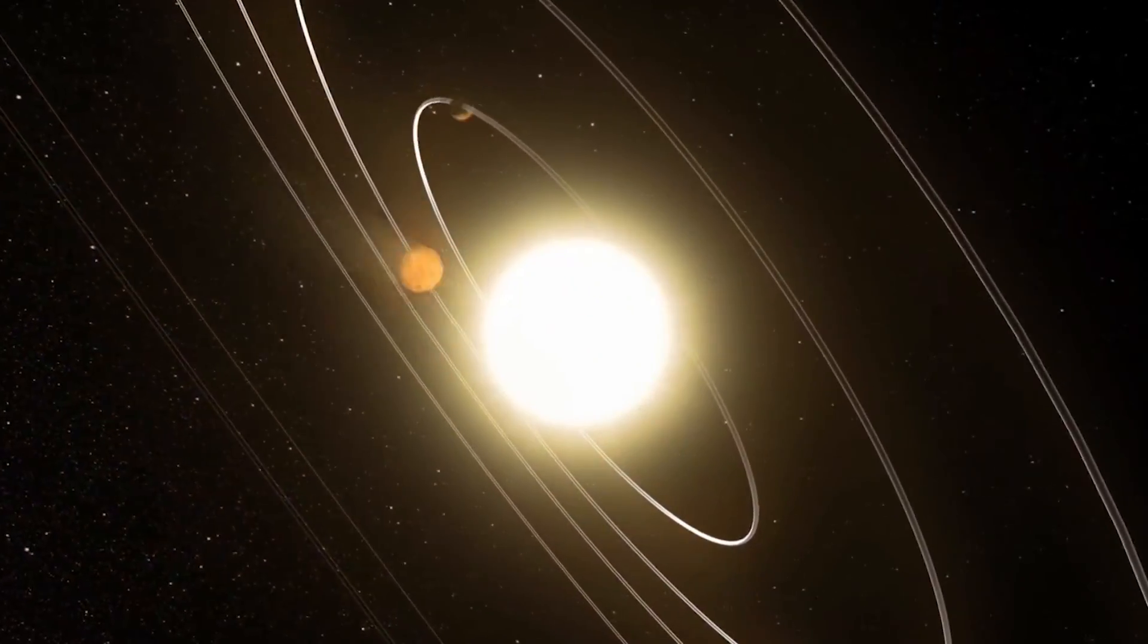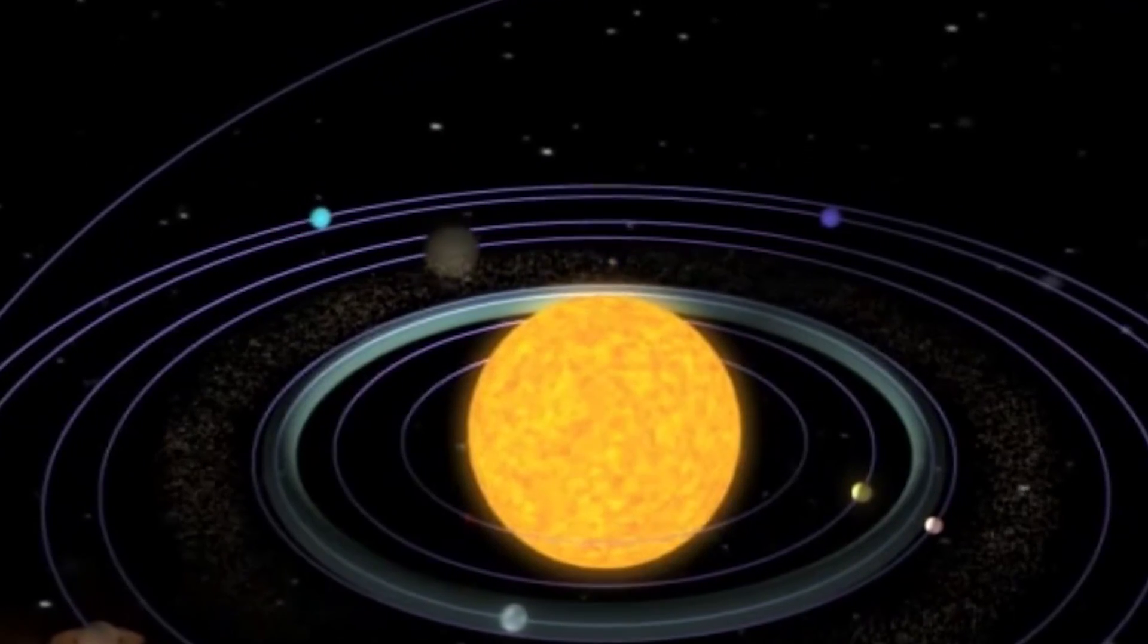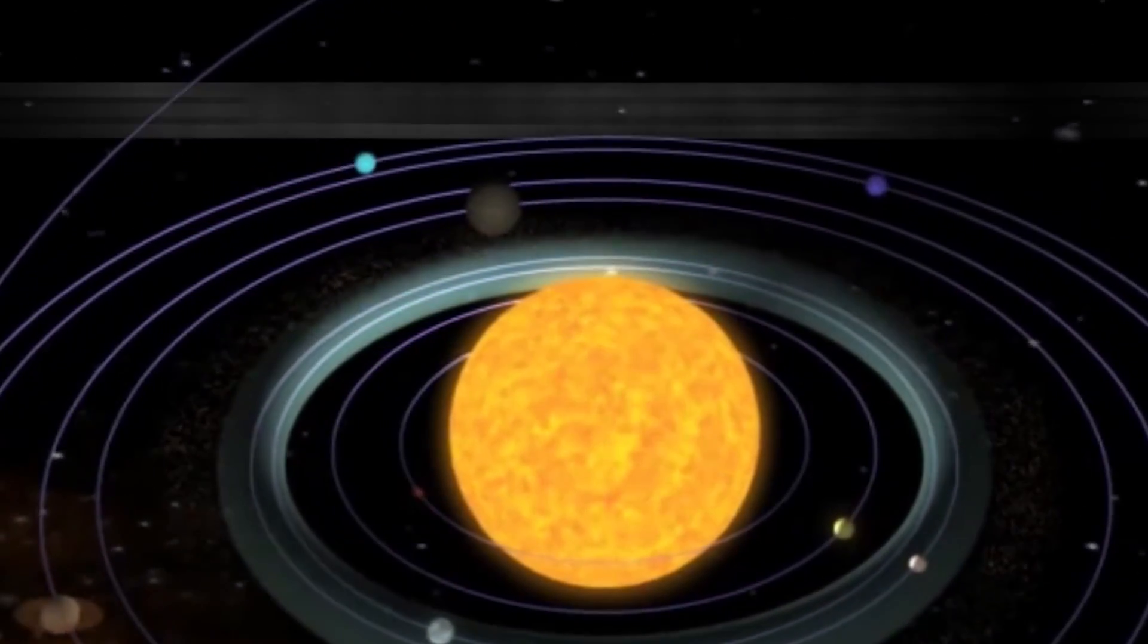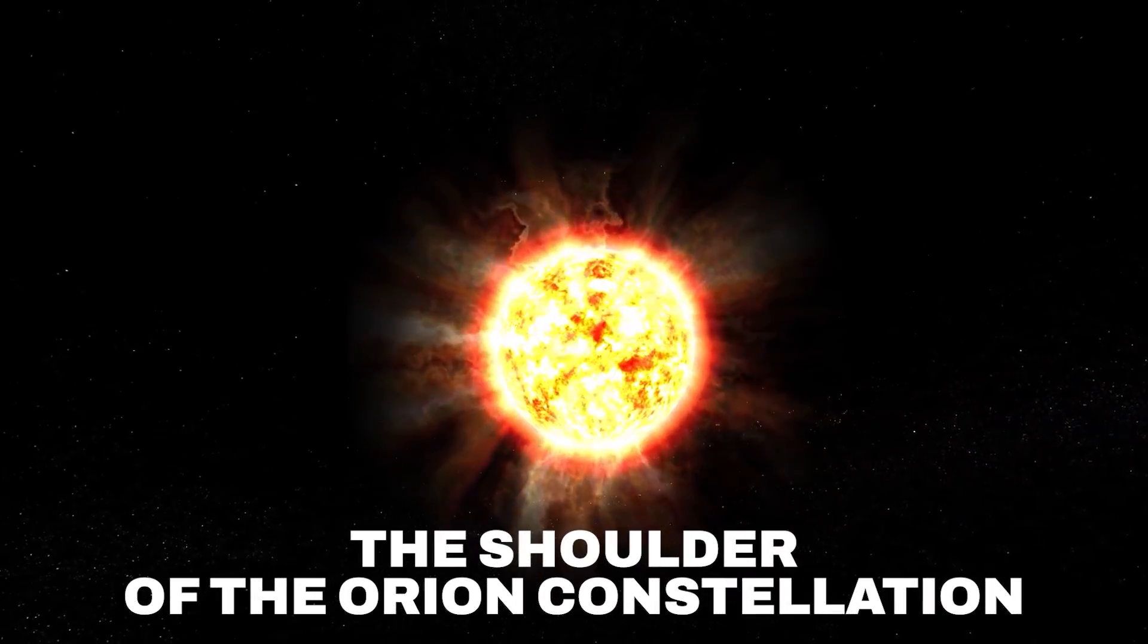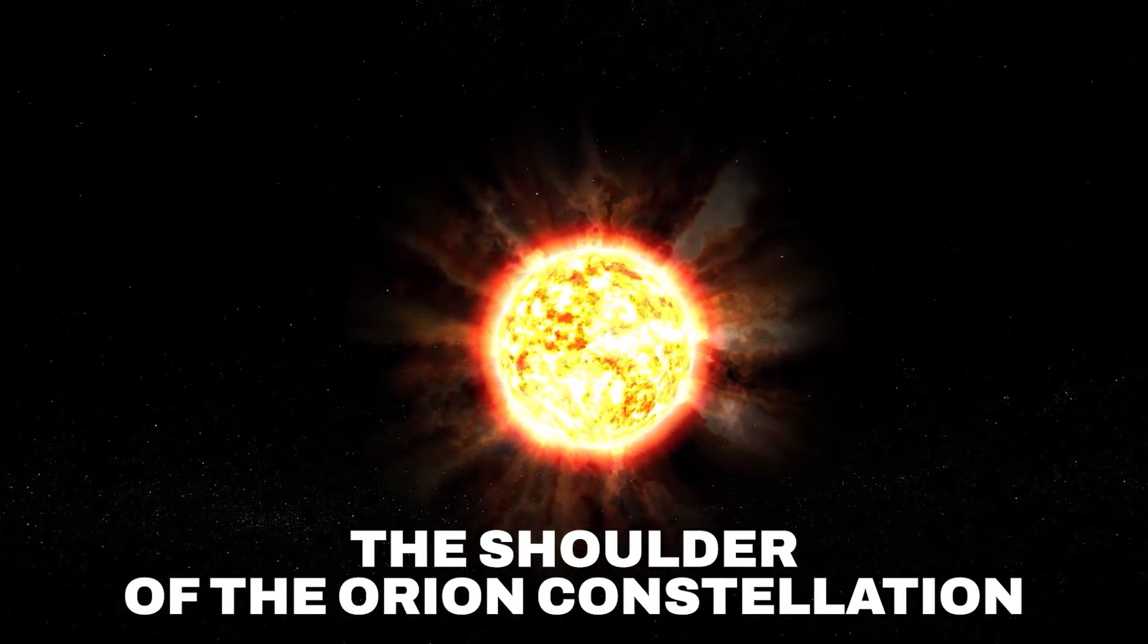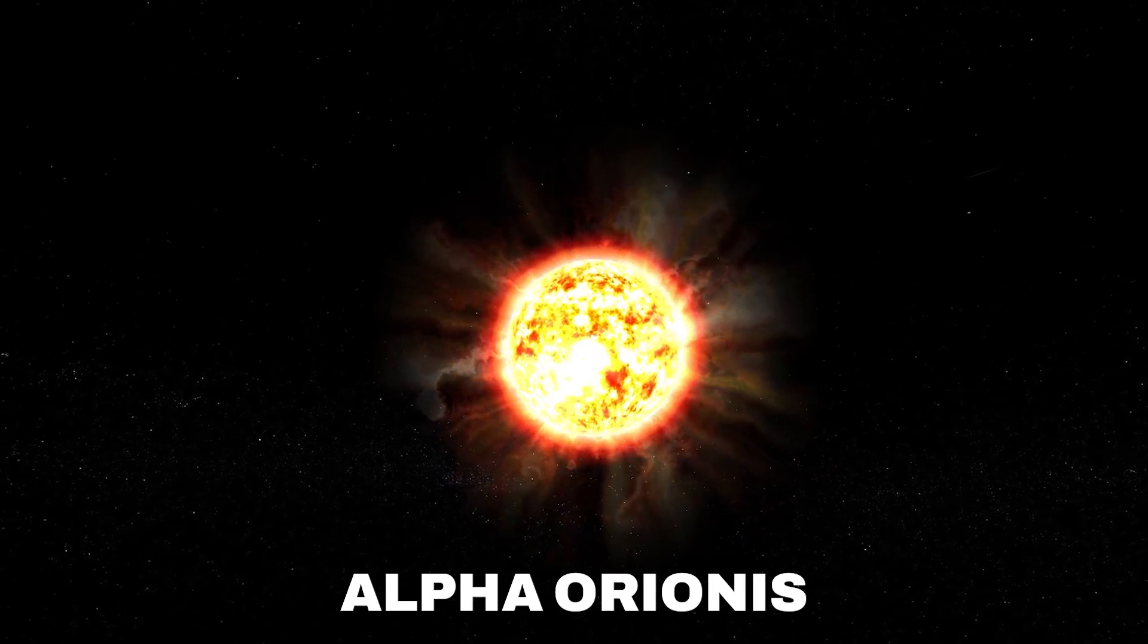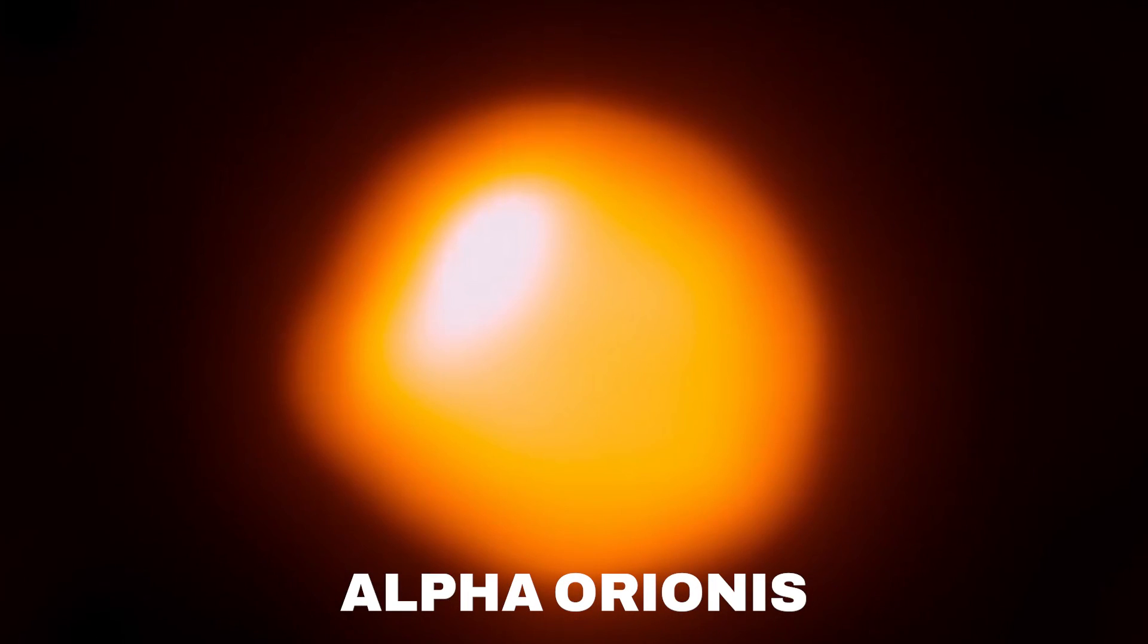Betelgeuse is one of the massive stars found in our starry sky, which ages back to only 10 million years. This young star is commonly called the shoulder of the Orion constellation, or Alpha Orionis, due to its recent reddish and radiant appearance.